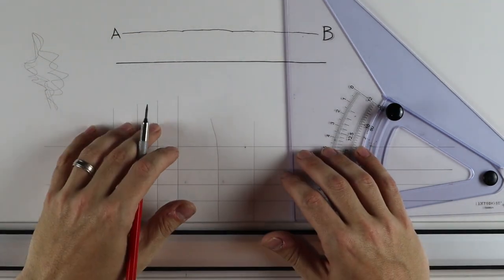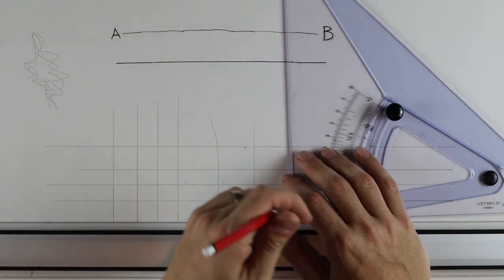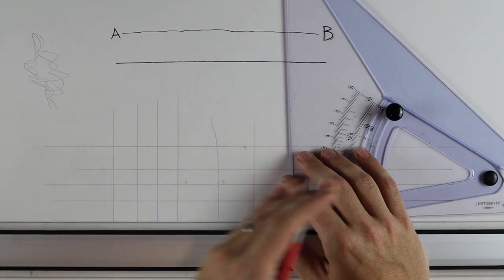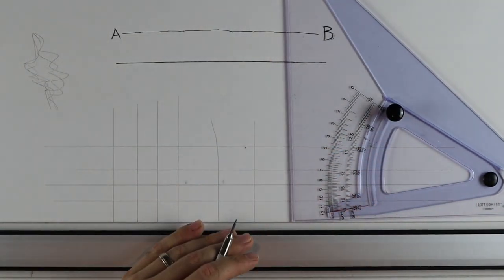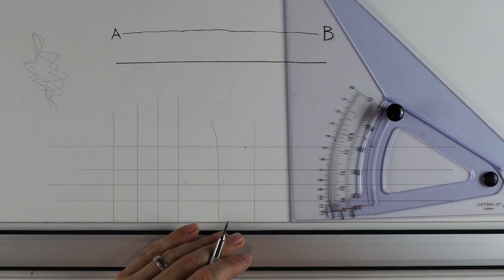So now, in the future, when we draft, you don't even have to think about it. We don't have to talk about pulling. You're always going to go from across your body, always pulling your lines.